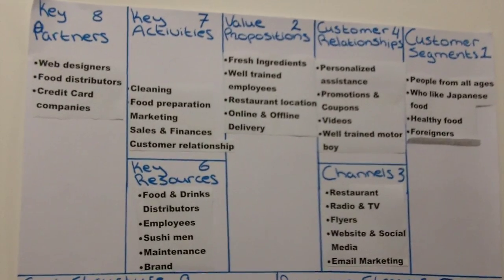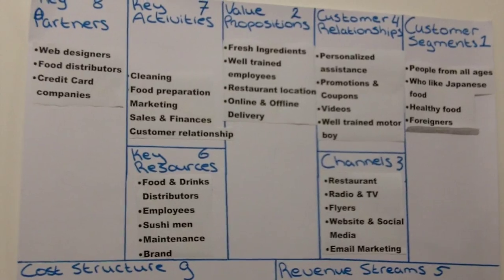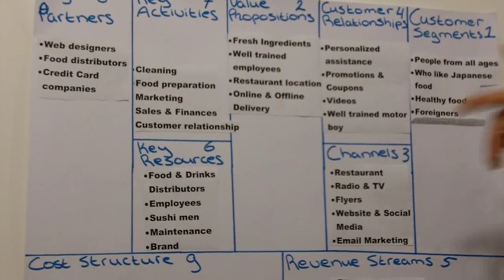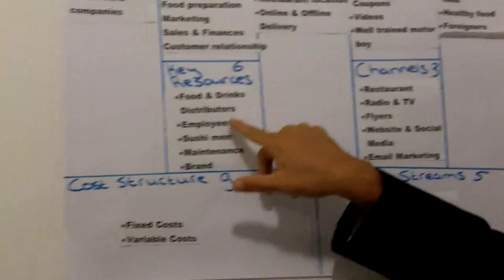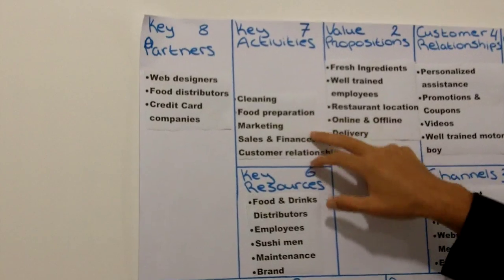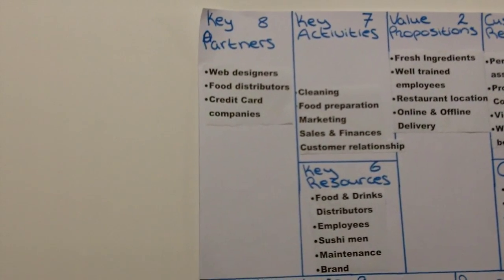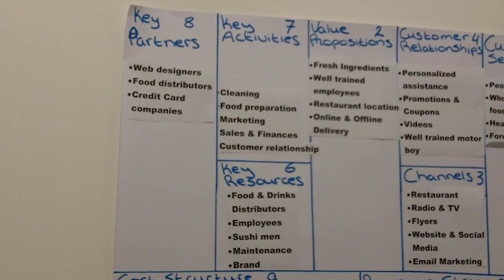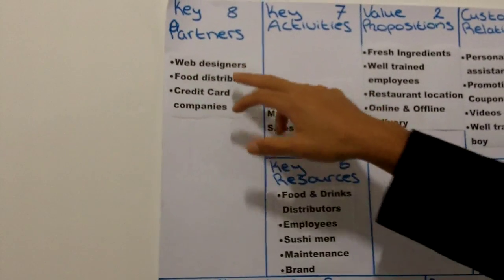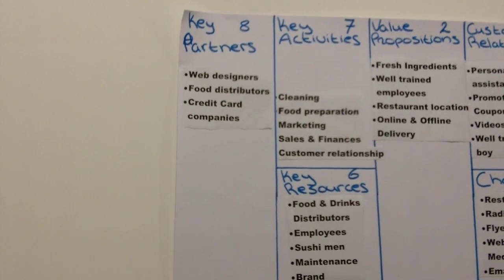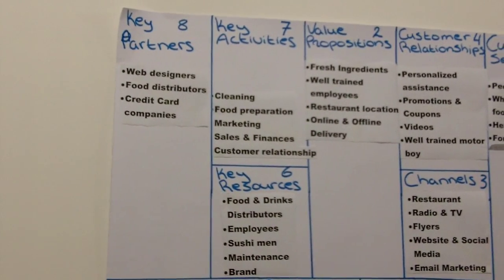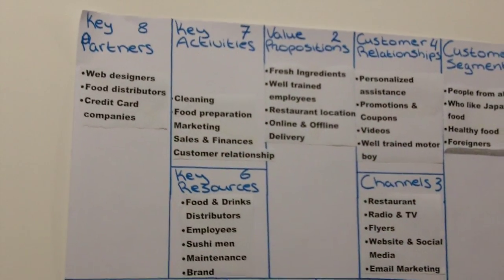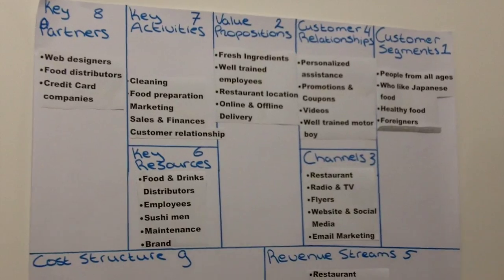In the first three videos we covered the nine building blocks, how to fill in customer segmentation, value proposition, and channels. Then we learned how to fill in customer relationship, revenue streams, and key resources. In the last video we talked about key activities and key partners, which are very important for some businesses. For our Japanese restaurant, we need a web designer to build a website, a food distributor, and credit card companies. If you can think of any other partners that are important, fill them in — this is your business, and this example is just here to make your life easier.